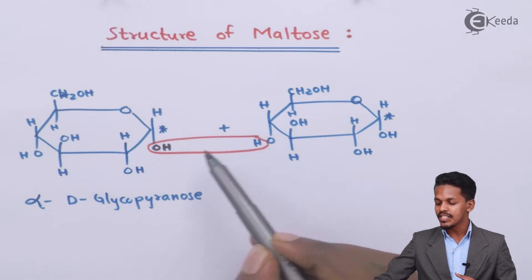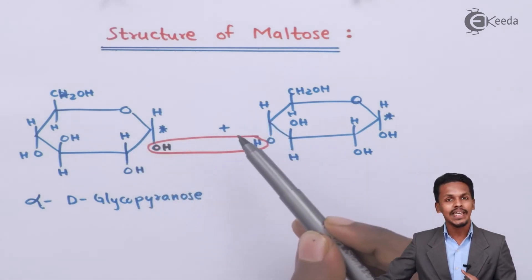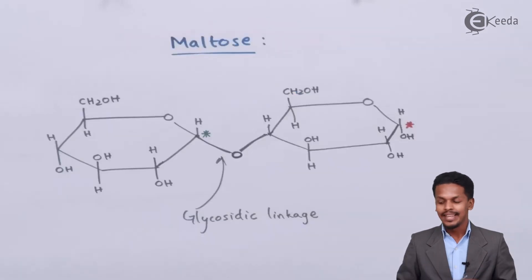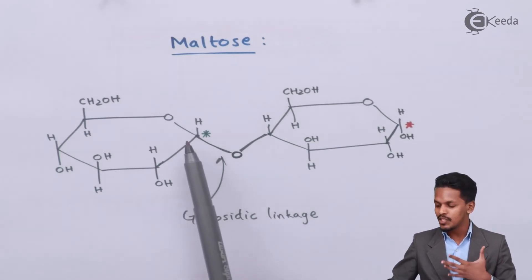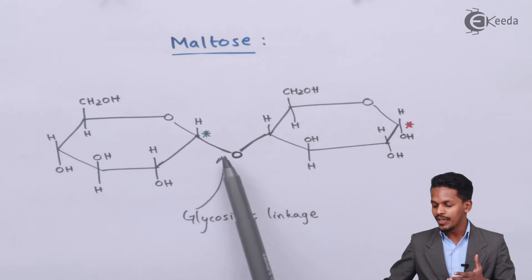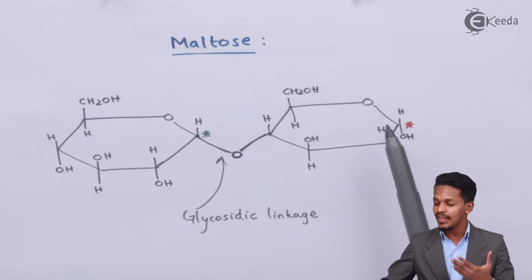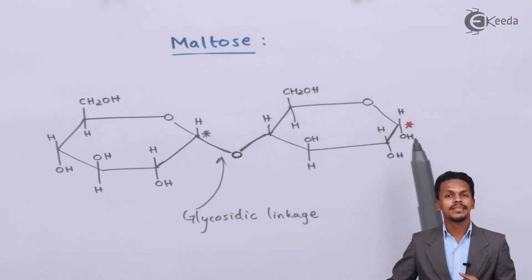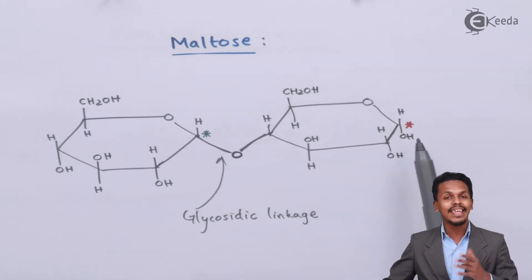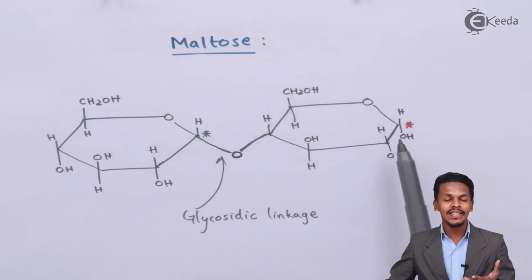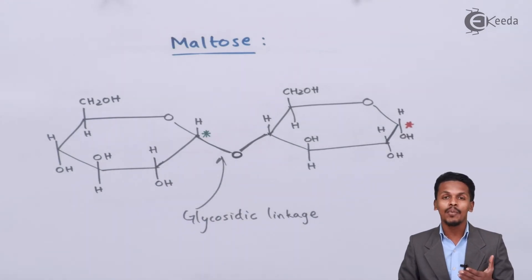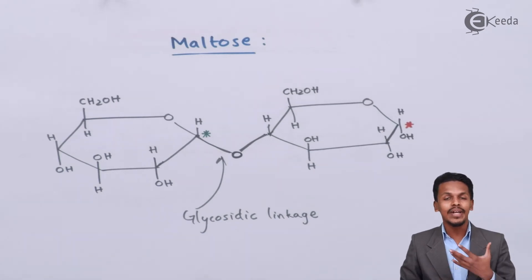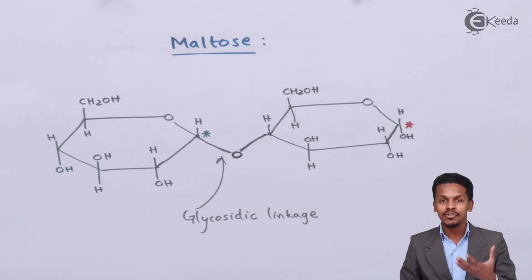In maltose, the oxygen is present at the lower side, which is the glycosidic linkage. Now, maltose is a reducing sugar because one of the anomeric carbon atoms is involved in bonding with the oxygen atom, but we still have a free anomeric carbon atom. This free carbon with its OH group can reduce Fehling's solution as well as Tollens' reagent, and that's why maltose is considered a reducing sugar.